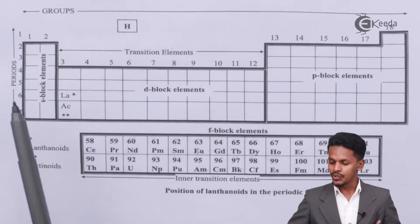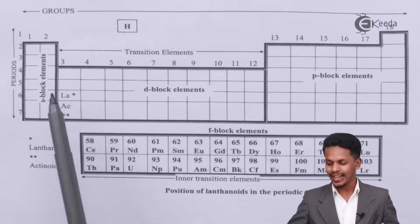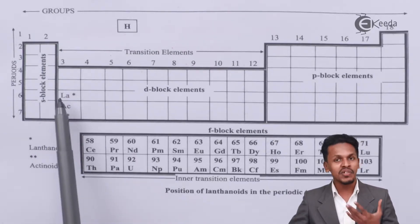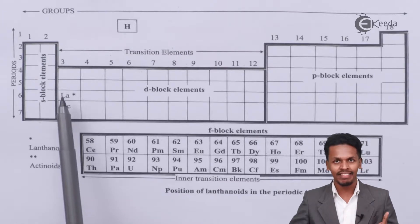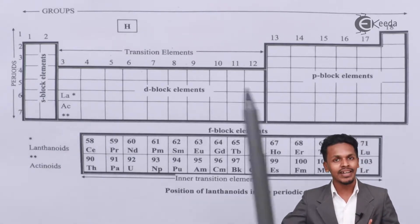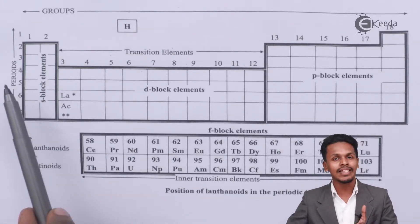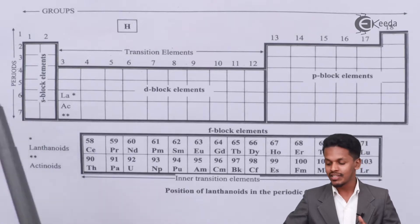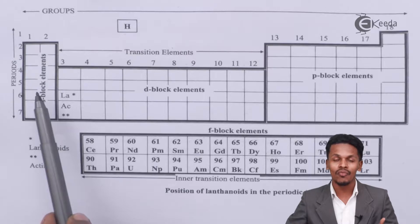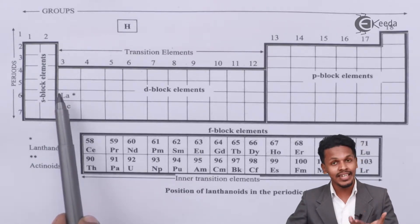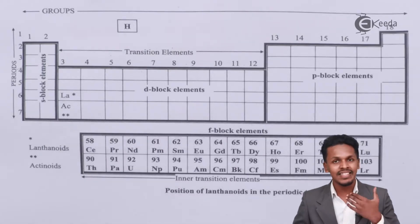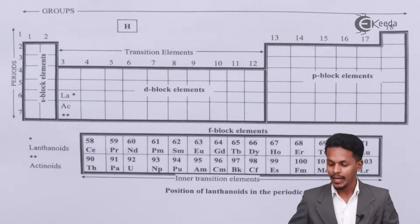Lanthanoids are present in the sixth period and the third group. When we talk about electron filling, we fill from left to right, and the number of electrons increases by one unit as we move across — this is a gradual change that we observe.